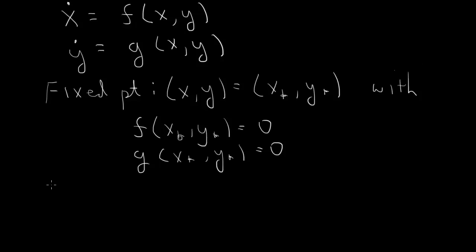So then what about the stability of these fixed points? Well, we have to perturb the fixed points. So we let x of t equal x star plus some perturbation epsilon which can vary in time. And we have y of t equal y star plus some independent perturbation delta which can also vary in time.